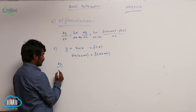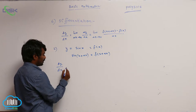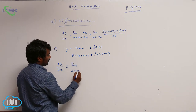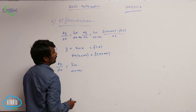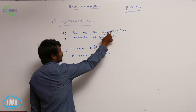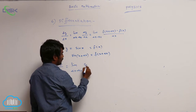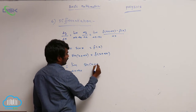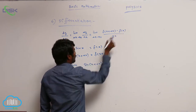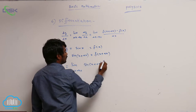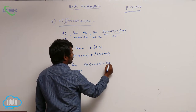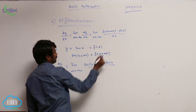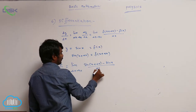dy by dx is equal to limit delta x tends to 0, f of x plus delta x — that is sin(x plus delta x) — minus f of x, minus sin x, divided by delta x. You write that down.